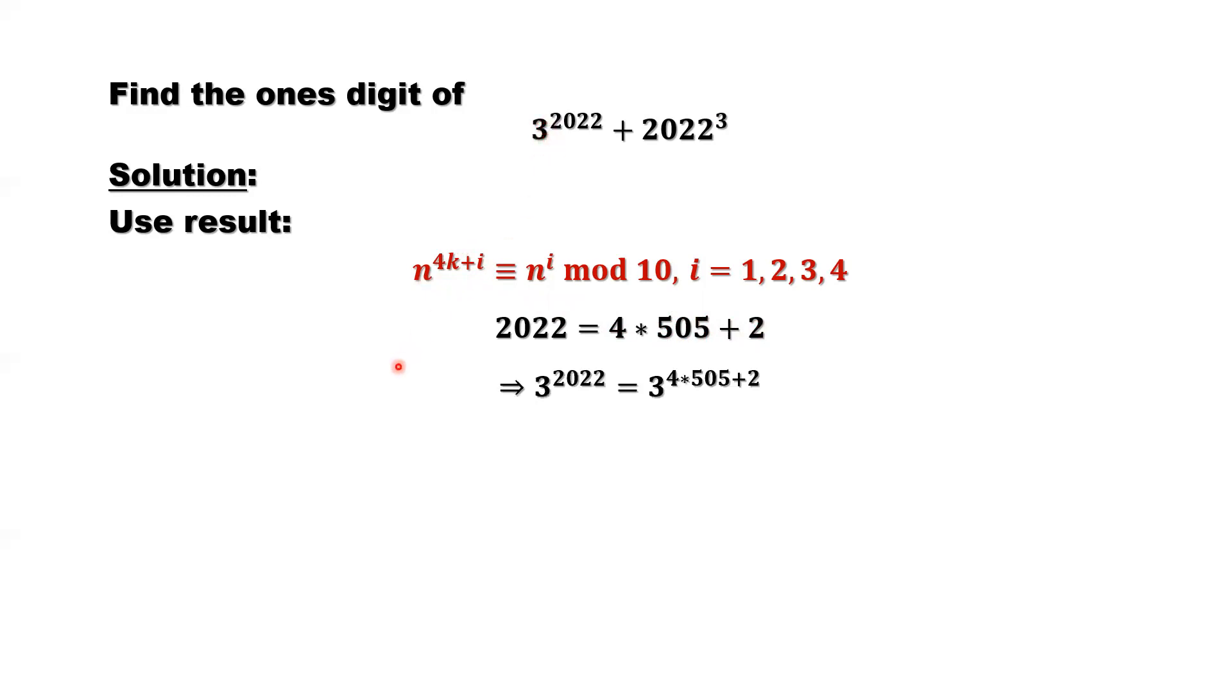What is n in our case? n, that's 3. So 3 to the power of 2022, rewrite. If divided by 10, they should have the same one's digit with 3 to the power of 2.